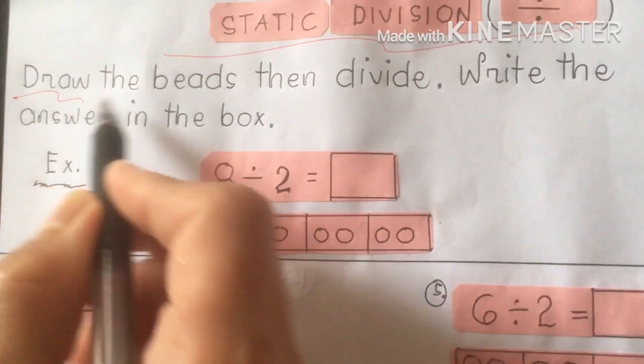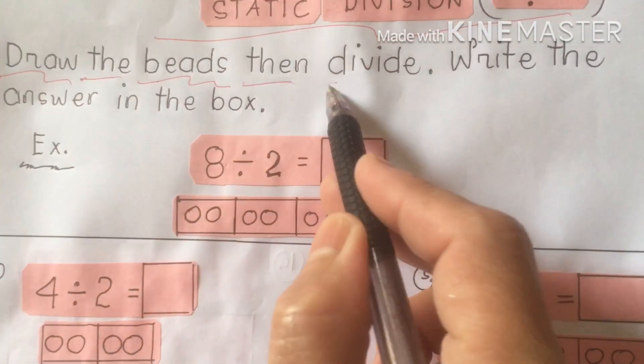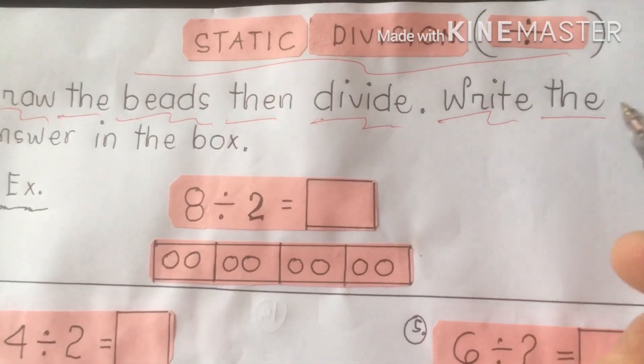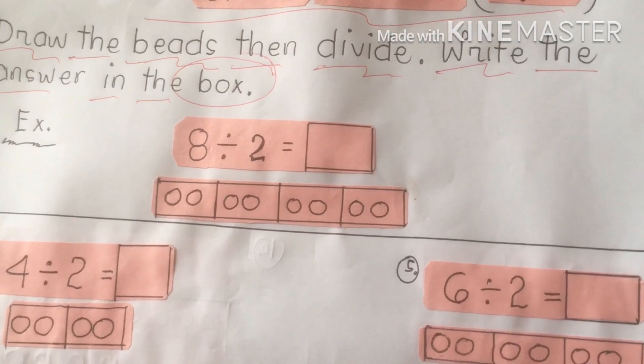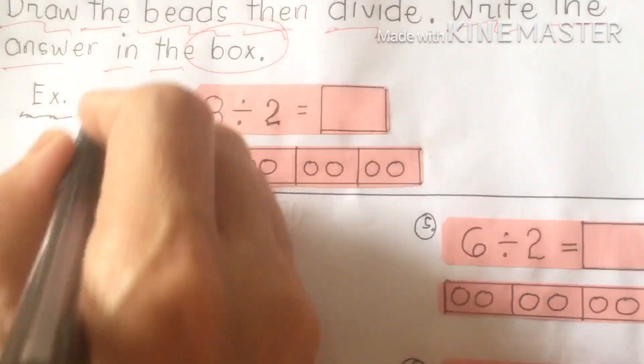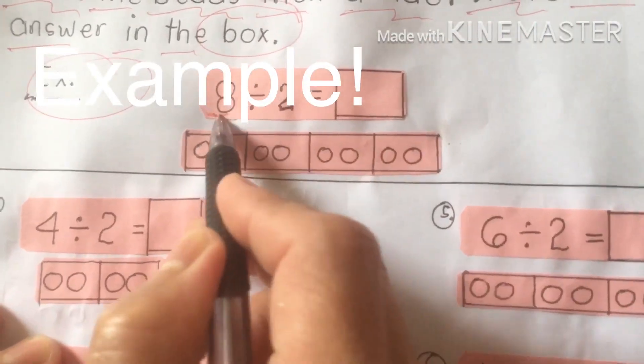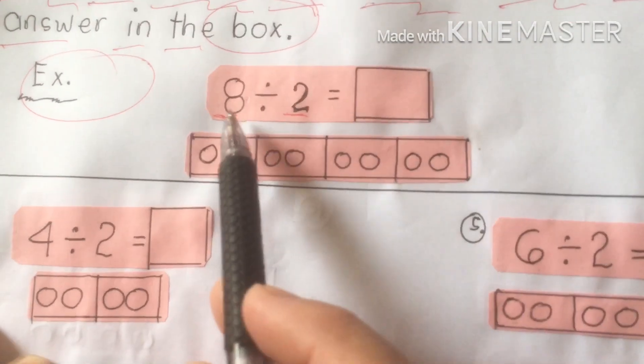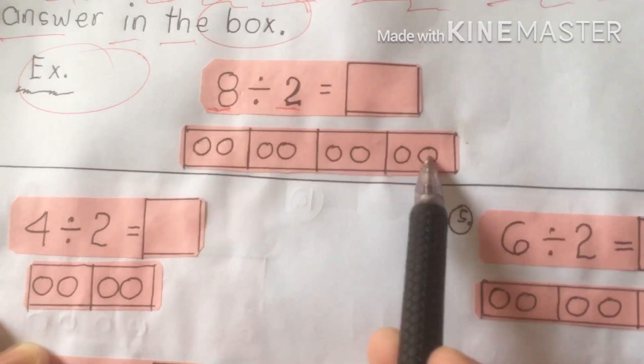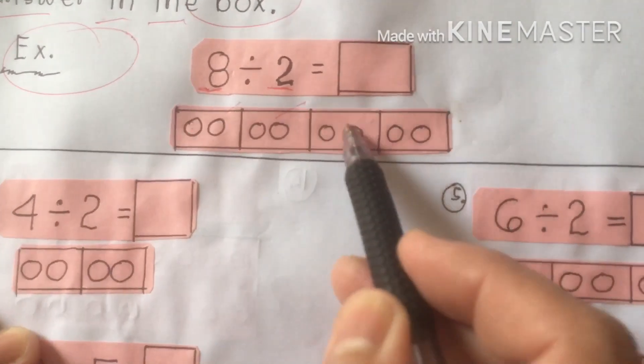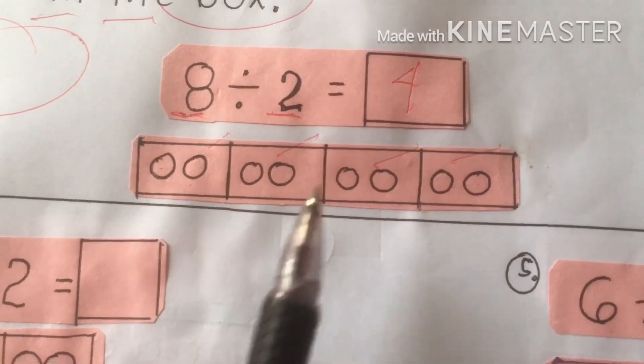The direction says we are going to draw the beads, then divide them and write the answer in the box. For example, 8 divided by 2. We are going to group eight beads: 1, 2, 3, 4, 5, 6, 7, 8. Then we group them by 2: 1, 2 — 1, 2 — 1, 2 — 1, 2. So we have 4 groups. The answer is 4. By counting and grouping by 2, 8 divided by 2 equals 4. This is the quicker and simplest way.